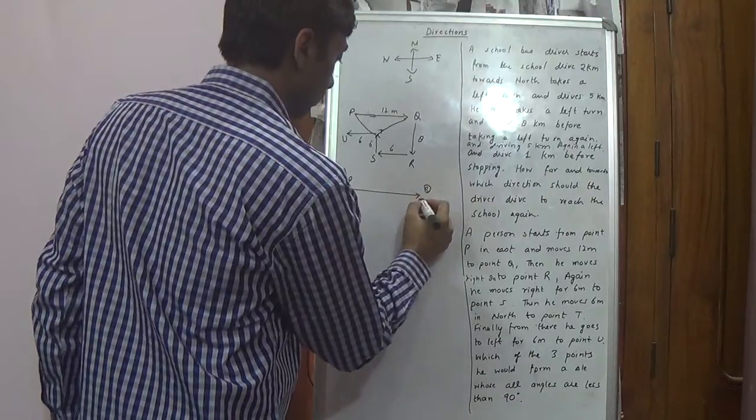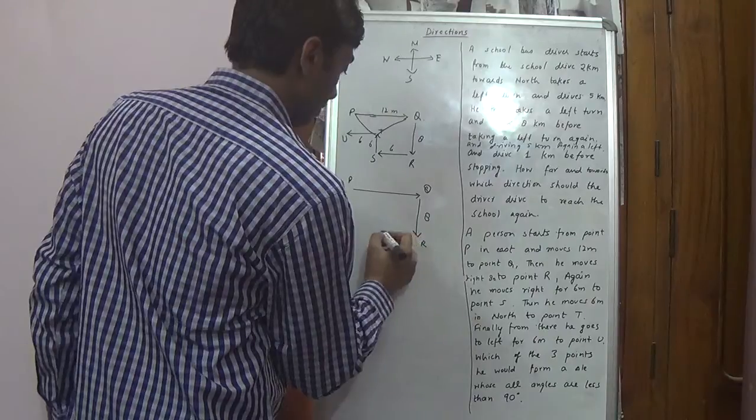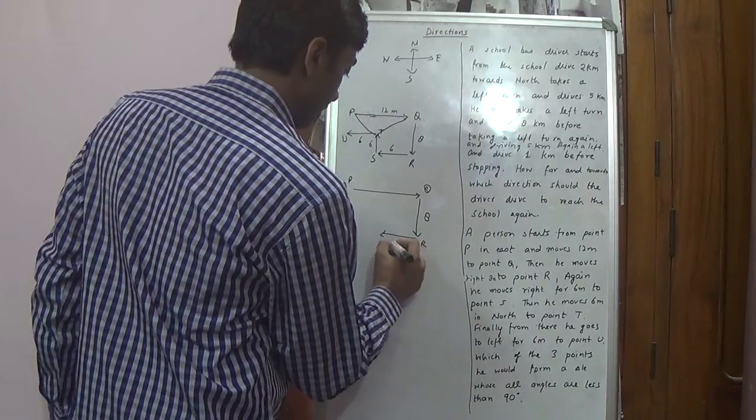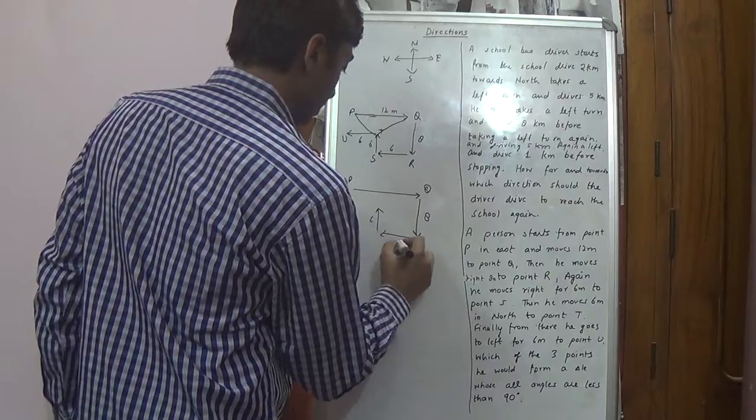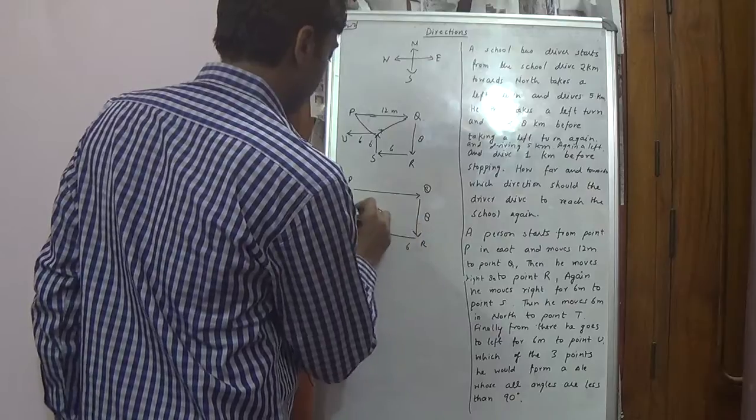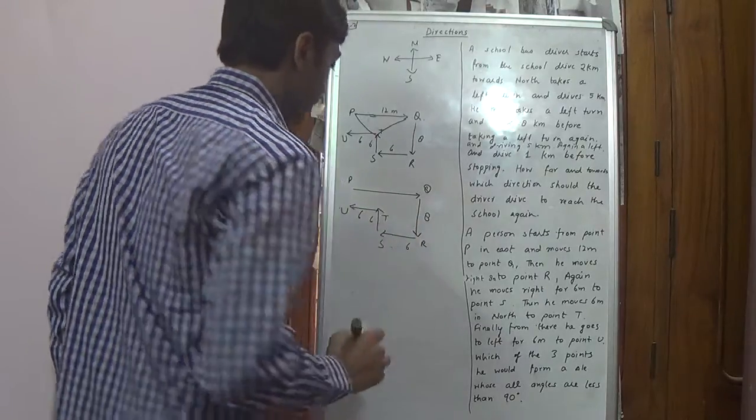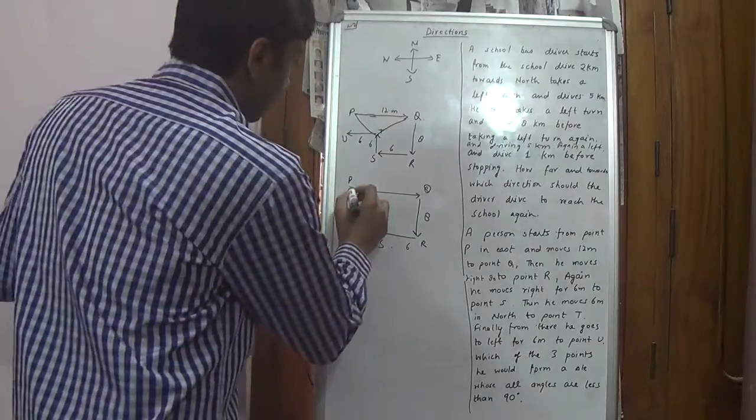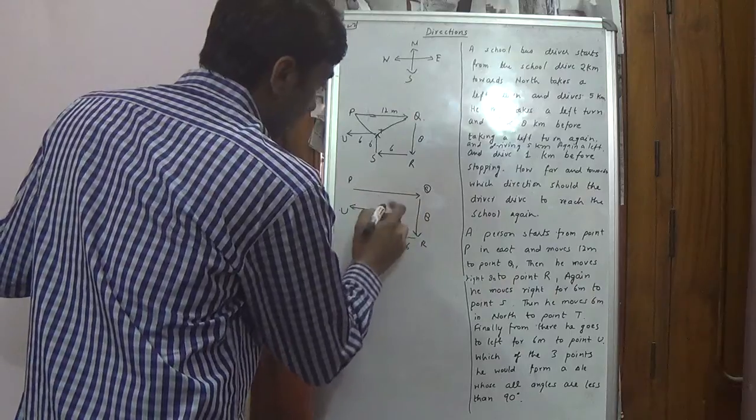Here, T, R, S. Six, six. S, T, and then U. Six. These points are in line, this point is midway between this line.